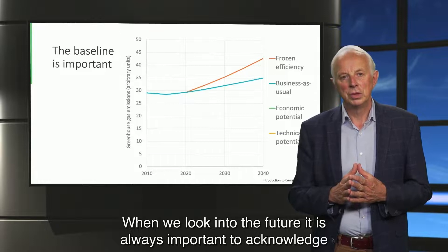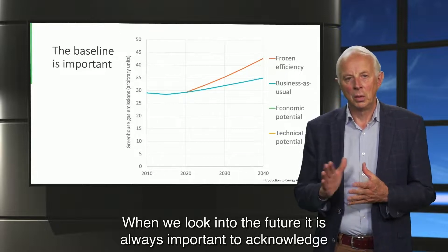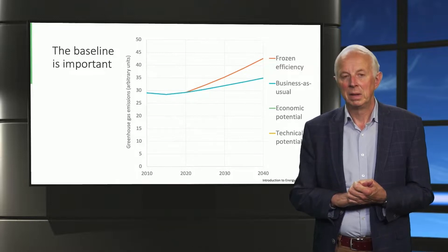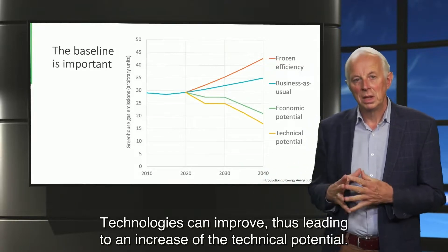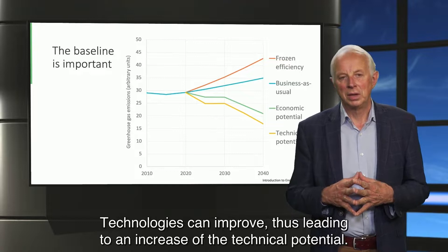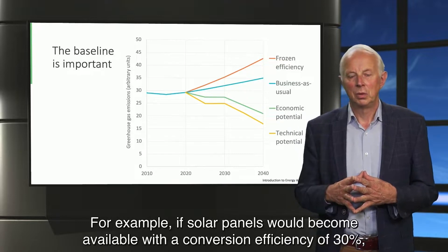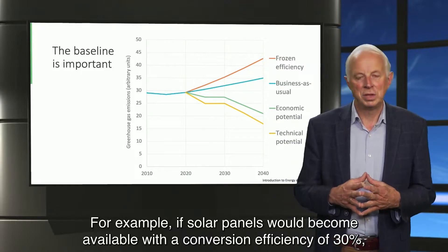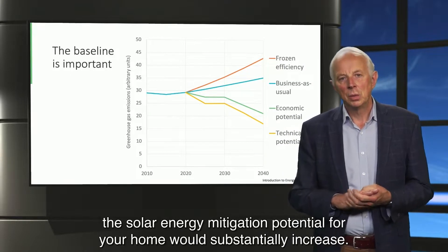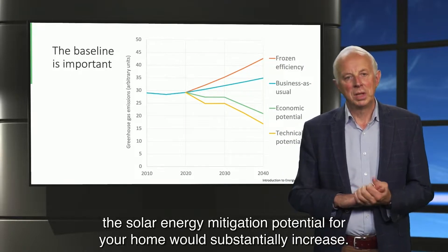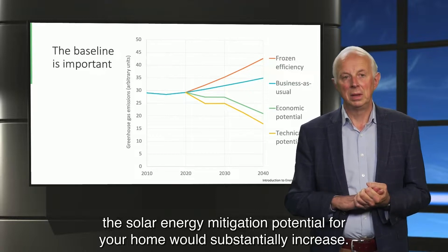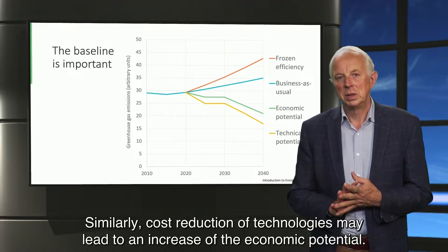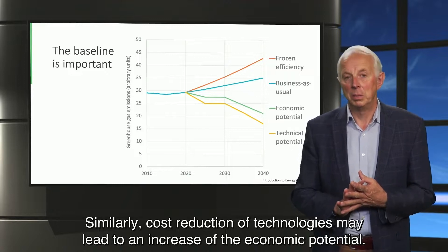When we look into the future, it is always important to acknowledge that the mitigation potential can change over time. Technologies can improve, thus leading to an increase of the technical potential. For example, if solar panels would become available with a conversion efficiency of 30%, the solar energy mitigation potential for your home would substantially increase. Similarly, cost reduction of technologies may lead to an increase of the economic potential.